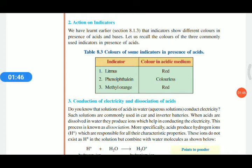HCl is a gas because hydrogen is a gas and chlorine is another gas. They combine to form hydrogen chloride, HCl, which is also a gas. When HCl mixes in water it turns to hydrochloric acid. At that time HCl separates into H⁺ and Cl⁻. This is known as dissociation.